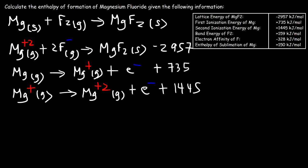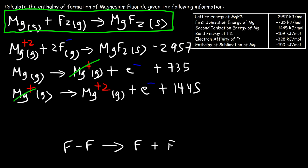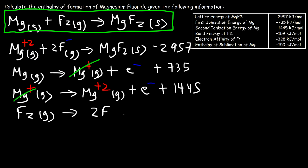Notice that we can cancel Mg⁺. Keep in mind, our goal is to add up all the reactions to get the target formation reaction, so we already have solid magnesium fluoride on the right side and must not cancel that. Now, for the bond energy of fluorine: the fluorine molecule contains a single bond, and the bond energy is the energy required to break that bond, producing two fluorine atoms. Breaking one mole of gaseous F₂ into two gaseous fluorine atoms requires +159 kJ/mol.